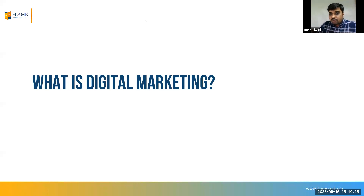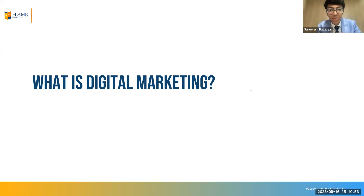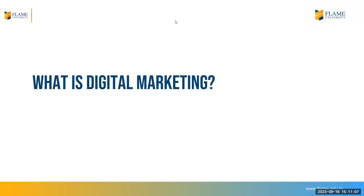If anybody wants to unmute and answer, you can raise your hand. Amber answered: digital marketing is about reaching a larger audience than you're currently visible to — your product is shown to them and they become interested. Professor responded: very good. If you're already talking about audiences and reach, you've started thinking from a marketer's point of view. Reach is one of the most important things — that's exactly what digital marketing helps us do.